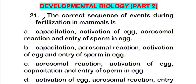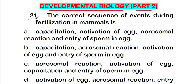Hello friends, welcome back to a new video on MCQs on developmental biology. This is part two of this series. Let's start the MCQ session on developmental biology. The first question of this video is question number 21: what is the correct sequence of events during fertilization in mammals?